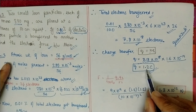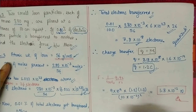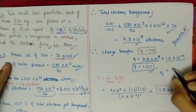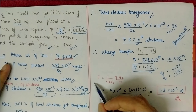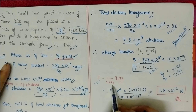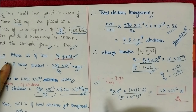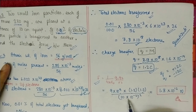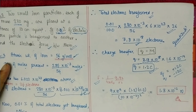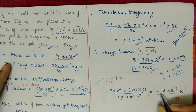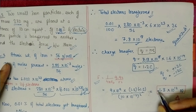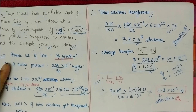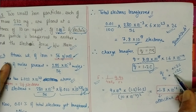The charge works out to 1.2 Coulombs. So the first particle gets +1.2 C and the second gets −1.2 C. Applying Coulomb's law: F = k·q₁q₂/r² = 9 × 10⁹ × 1.2 × 1.2 / (10 × 10⁻²)², the answer is 1.3 × 10¹² N. The negative sign indicates an attractive force, consistent with opposite charges.